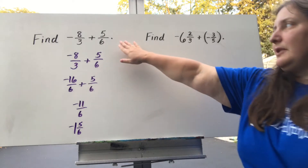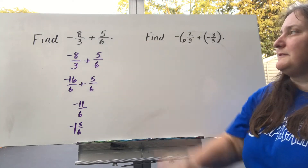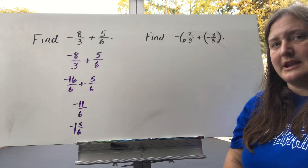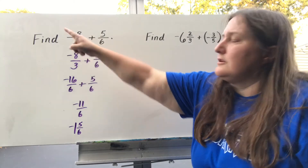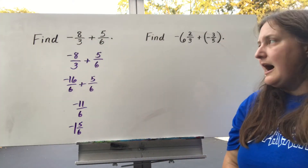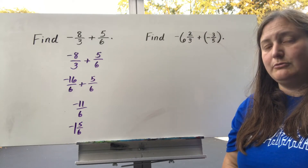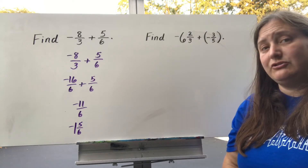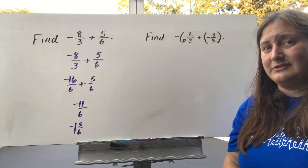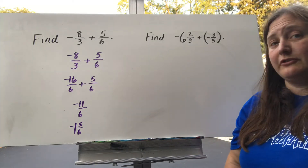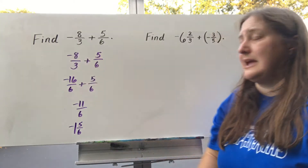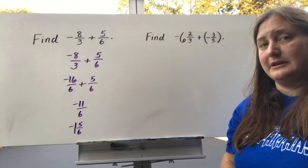Here's an example. I'm being asked to find negative 8 thirds plus 5 sixths. A lot of times when we have a negative fraction, we see the negative right out in front — it's not really with the numerator or denominator, it's just floating out front. I always add that negative sign to my numerator and I suggest you do the same. It makes it easier when we have to find common denominators. So I rewrote this problem making sure that my negative was up with my 8, so it became negative 8 over 3 plus 5 sixths.